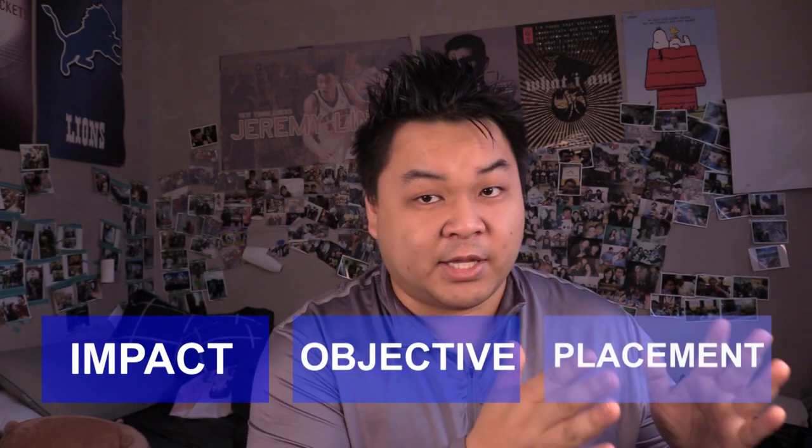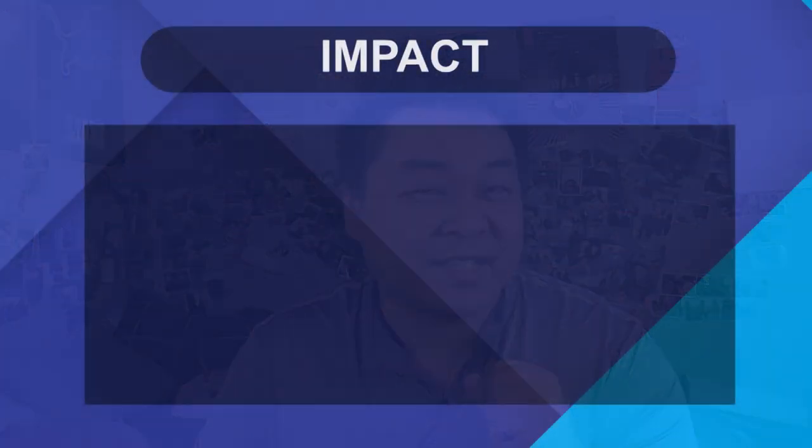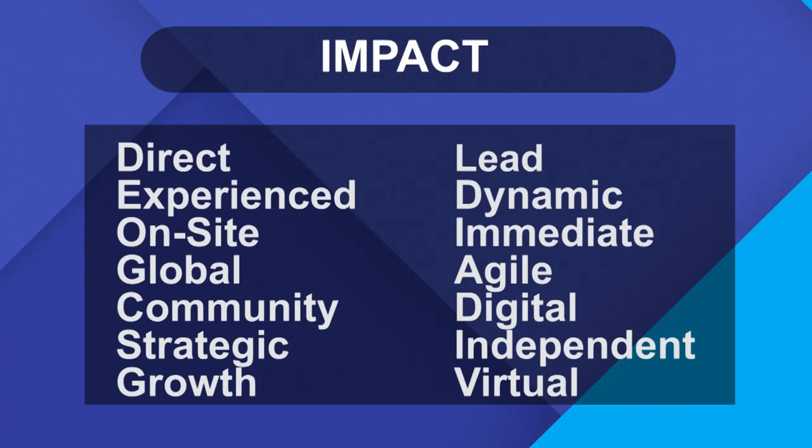Every job title is broken down into three different parts. First one is impact, second one is objective, third one is placement. For number one, impact, you can use words such as direct, lead, experienced, dynamic, on-site — which literally just means I'm working for someone, I'm working with someone, I work at a place. Like, there's nothing special about this. Any job you do, let's say a math tutor — I am dynamically teaching someone how to do their work. Does that mean you're dynamic? No. You're using words to describe something that doesn't seem that impressive.